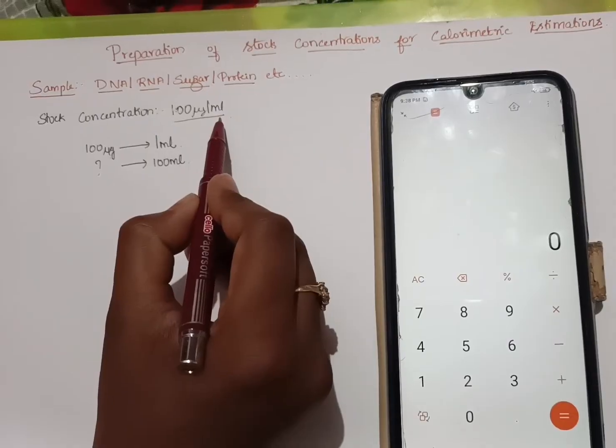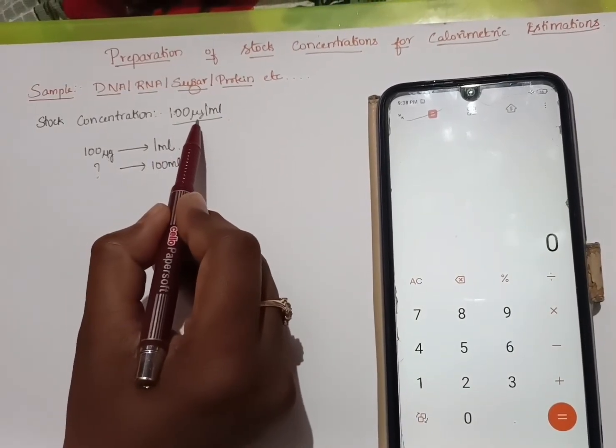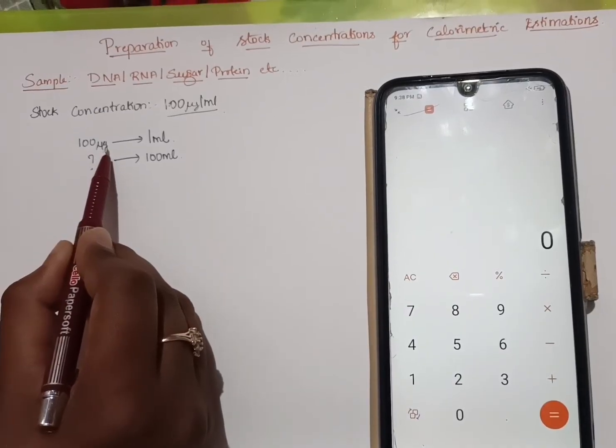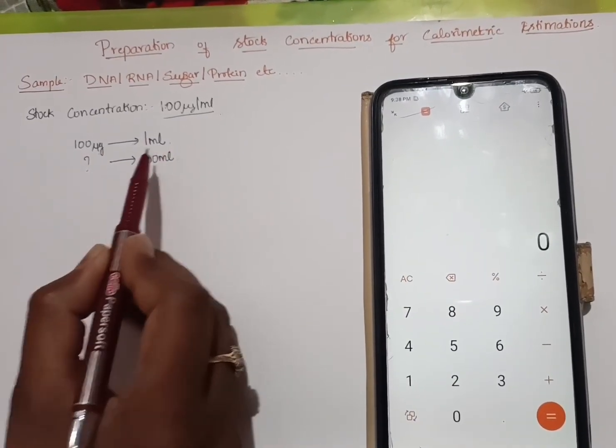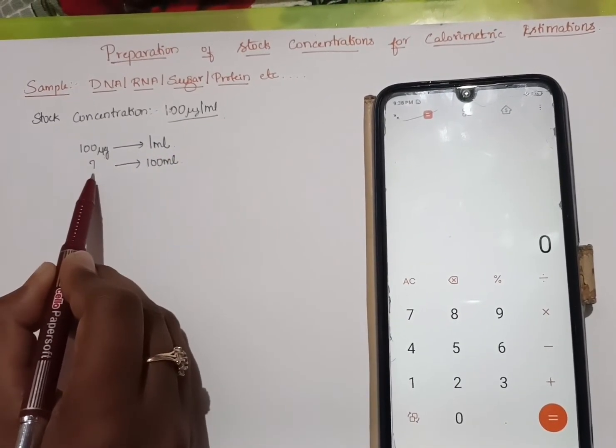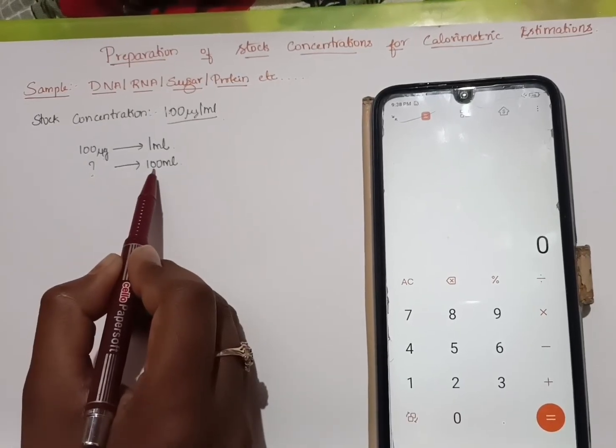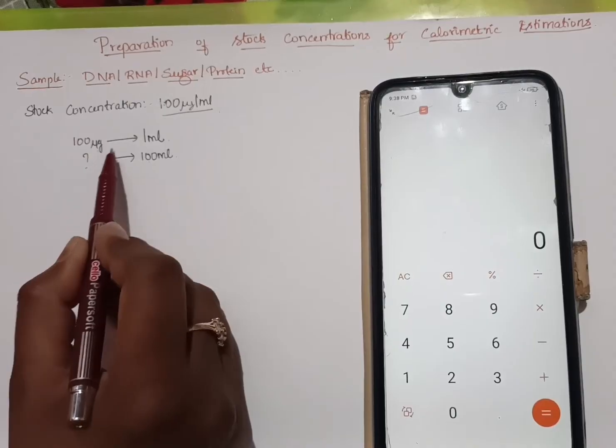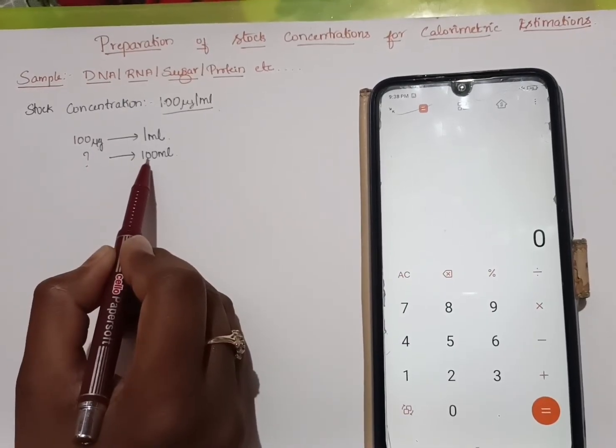So in 1 ml, I should have 100 micrograms of sample. Then how much micrograms should be present in 100 ml is what I should be finding out. For this, what we have to do is cross multiplication.